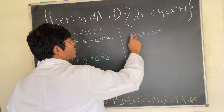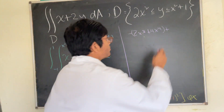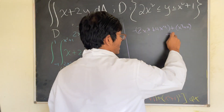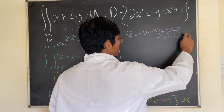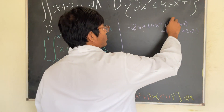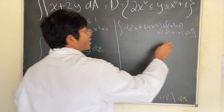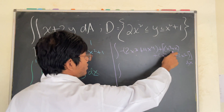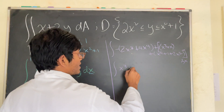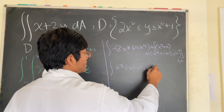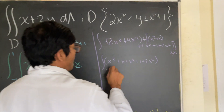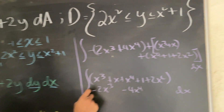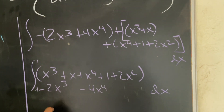We subtract that from: x times (x squared plus 1) gives x cubed plus x, plus (x squared plus 1) squared gives x to the fourth plus 2x squared plus 1. So combining everything under the outer integral from negative 1 to 1 dx, we get: x cubed plus x plus x to the fourth plus 1 plus 2x squared minus 2x cubed minus 4x to the fourth dx.